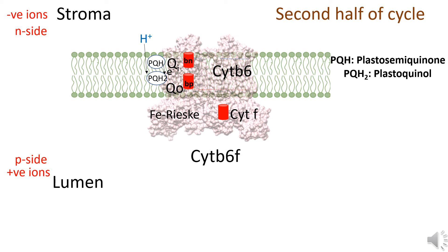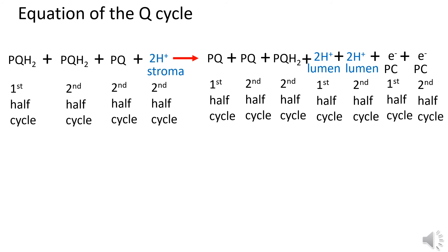Here is the reaction equation showing the substrates and products throughout the whole Q cycle, indicating which components come from and are formed in each half. Look through this equation carefully — it shows how many protons were consumed or produced in each half, how many electrons were produced, and how many plastoquinones you started with versus ended up with.